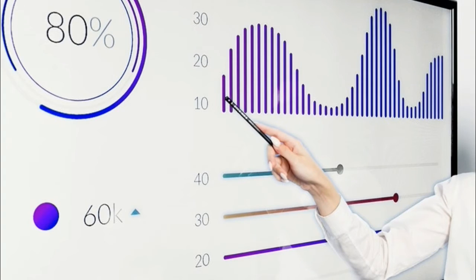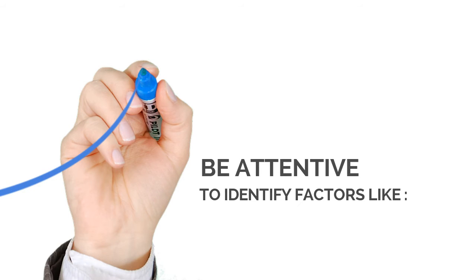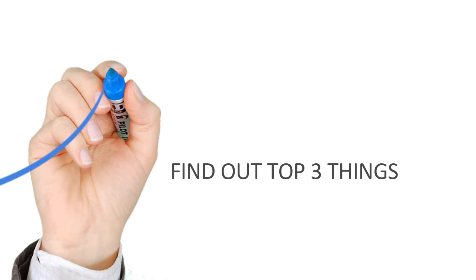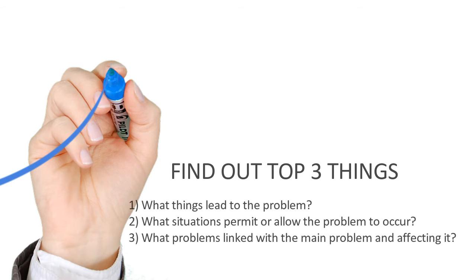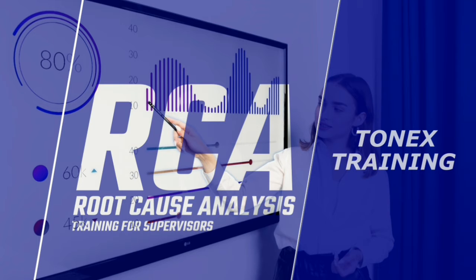To recognize the causal factors, be attentive to find out things like: What things led to the problem? What situations permit or allow the problem to occur? What problems are linked with the main problem and affecting it?